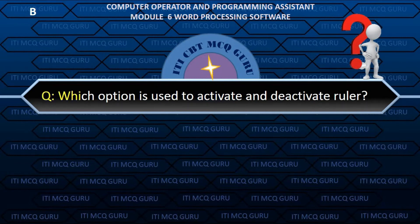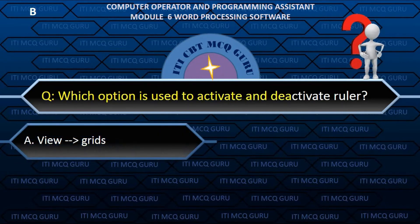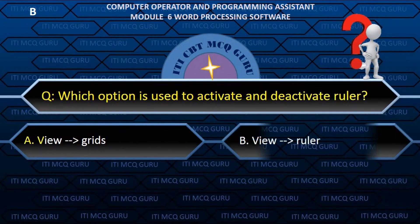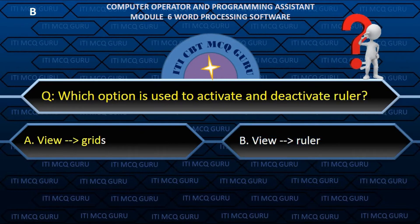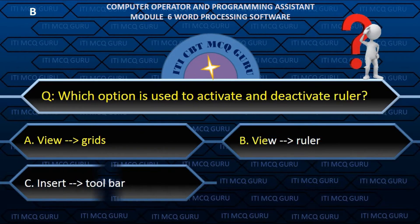Which option is used to activate and deactivate the ruler? B. View Ruler.